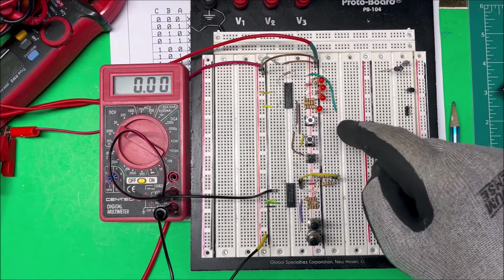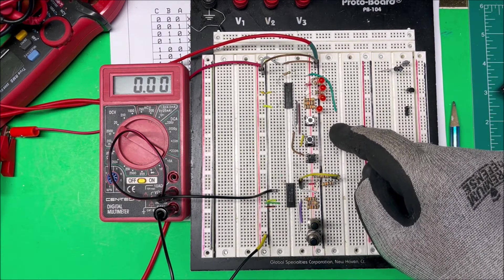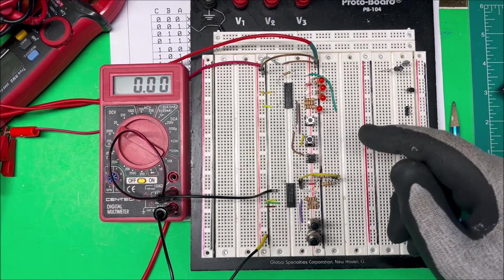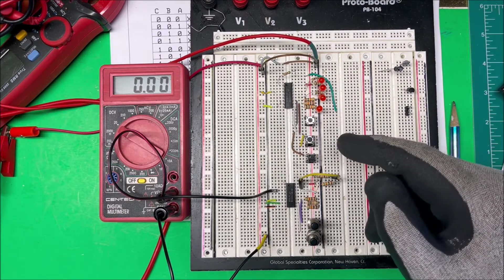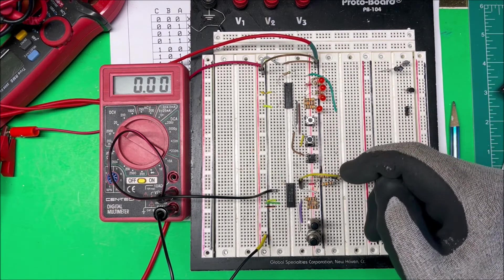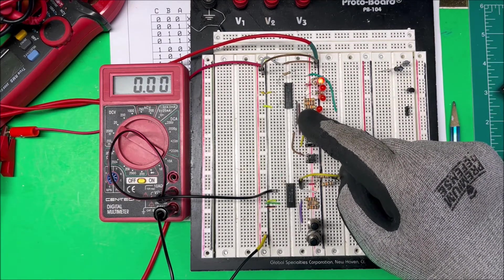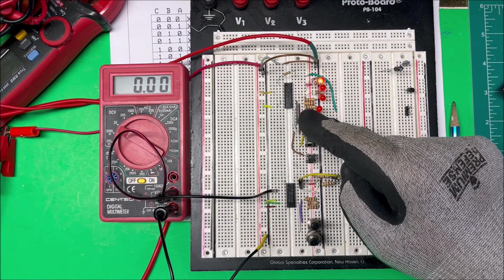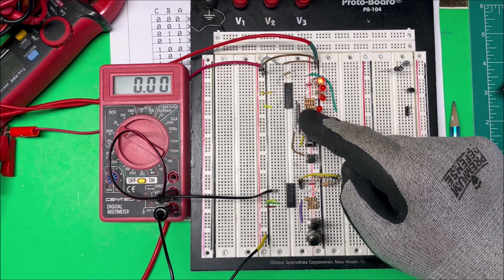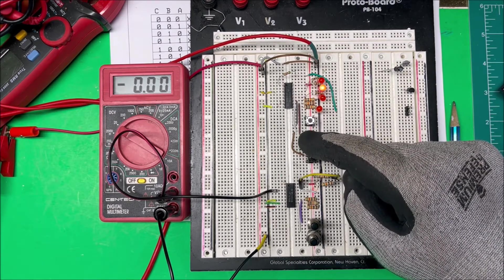And this here is my demultiplexer. So I'm putting 5 volts in on pin X there, or pin number 3 on the chip there. And if I have switch A on, that gives me X1.